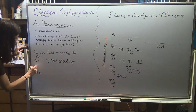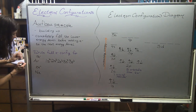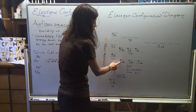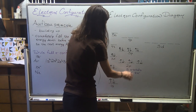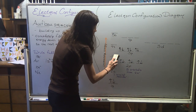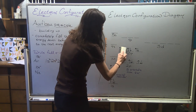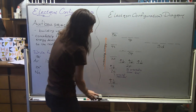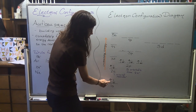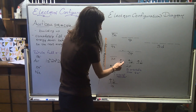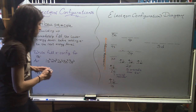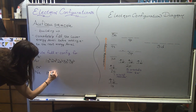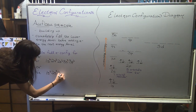Neon has only 10 electrons. I don't need the 3s or 3p orbitals for neon — filling 1s², 2s², and 2p⁶ accounts for all 10 electrons. The full configuration is 1s² 2s² 2p⁶.